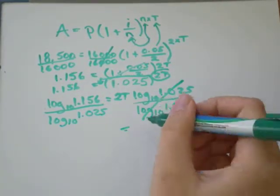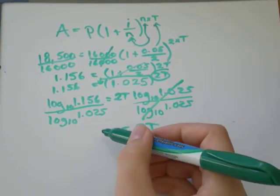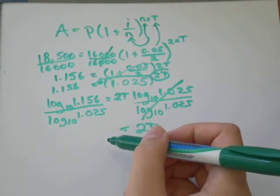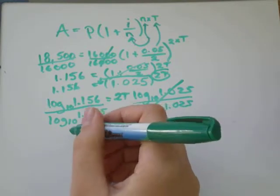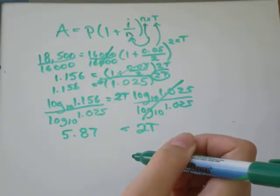Those will cancel out, and I'll be left with 2t on that side. Over here, I will be left with, when I divided them, I got like 5.87, something like that.